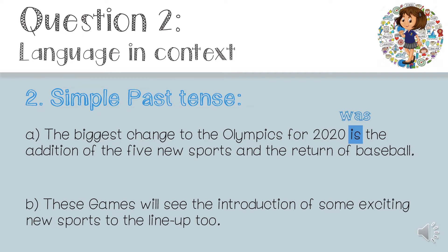Sentence number B: 'These games will see the introduction of some exciting new sports to the lineup too.' The verb in this case is 'will see'. This is the future tense. We just have to change it to the simple past tense. The simple past tense of 'will see' is 'saw', so the sentence will read: 'These games saw the introduction of some exciting new sports to the lineup too.'